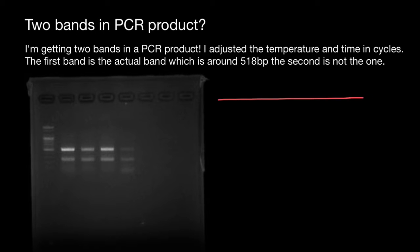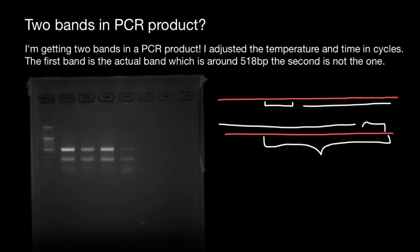Imagine that this is double-stranded DNA, and you designed your primers. For example, one goes here and another one goes here to make a new strand like this, and another strand like this. So this is your expected PCR product.